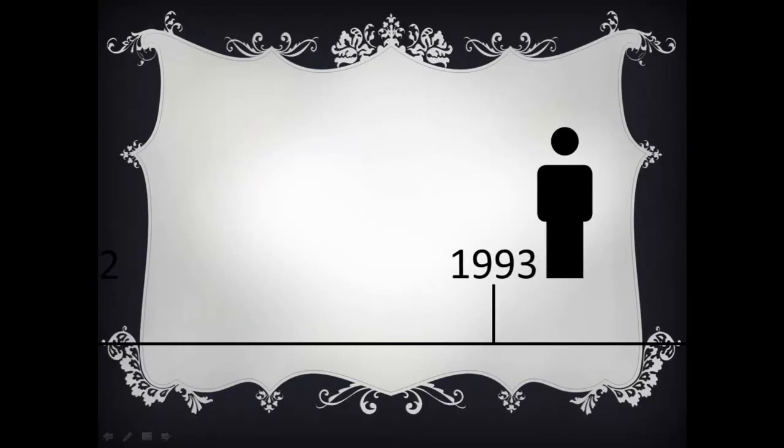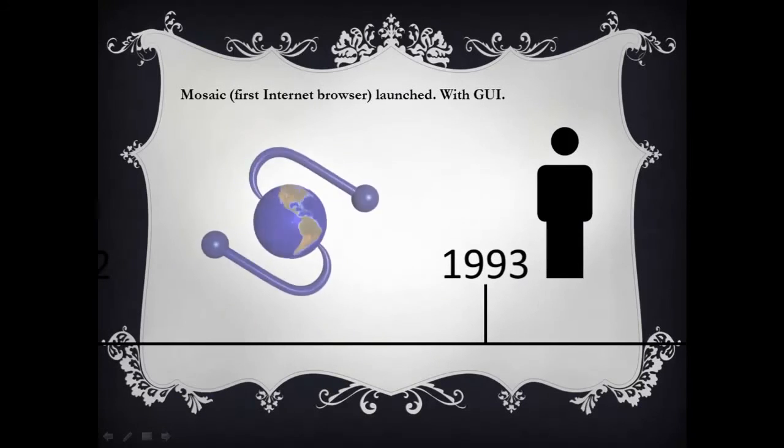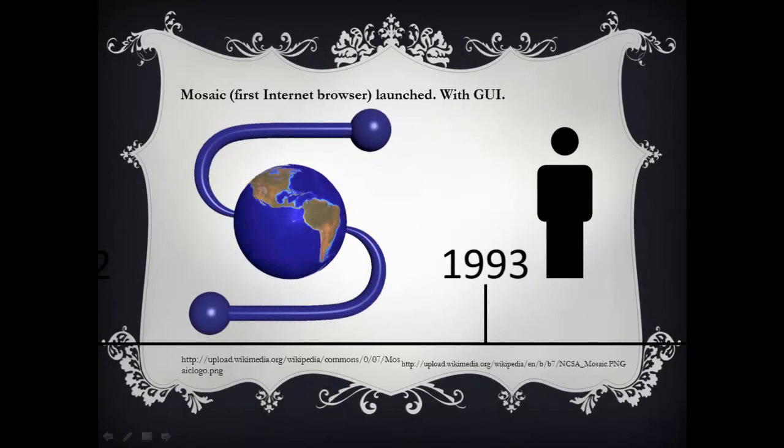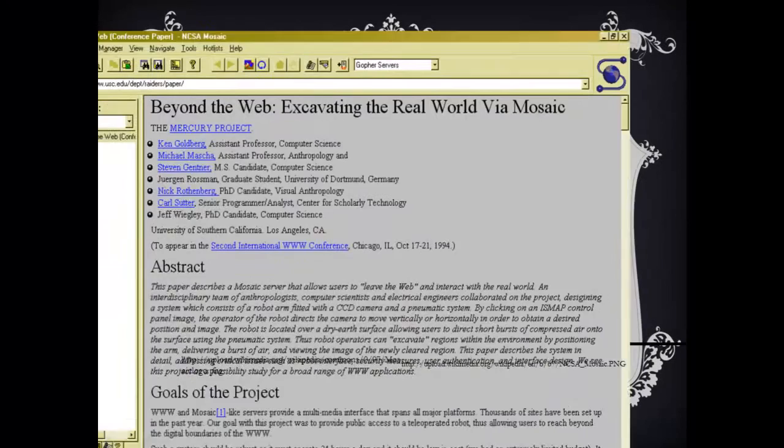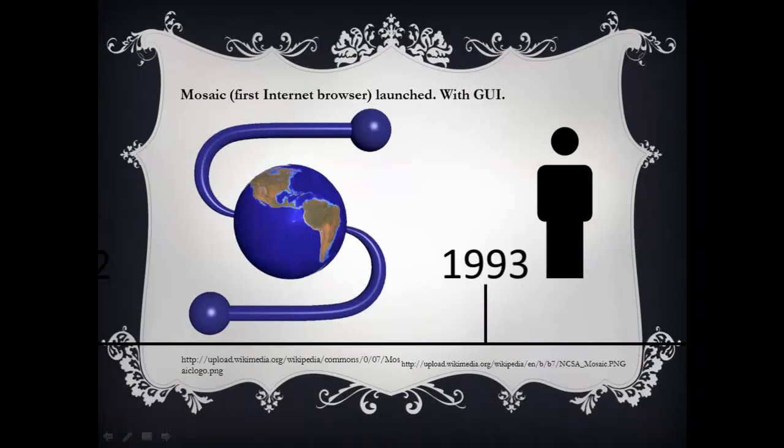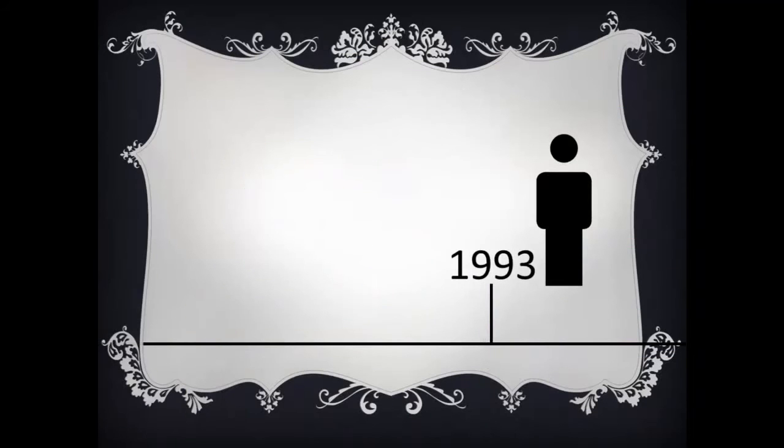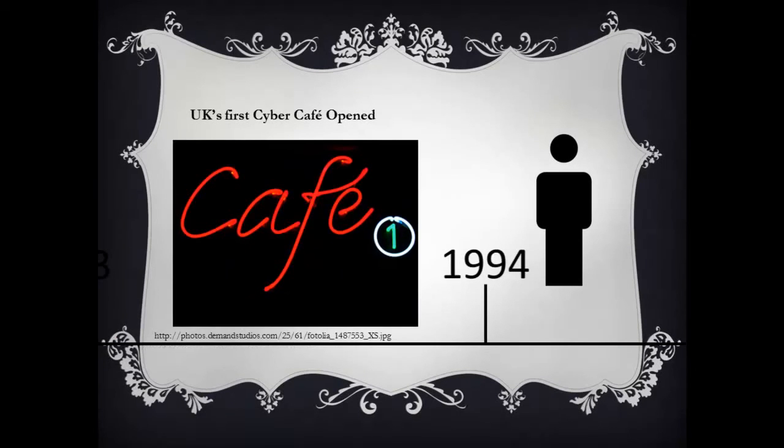In 1993, Mosaic was released, the first commercial software that allowed graphical access to users on the internet. It was the first internet web browser. In 1994, the UK's first cyber cafe was opened. The next year, Amazon.com and eBay.com were launched. They are both the largest online retailers.